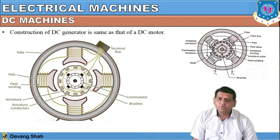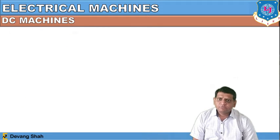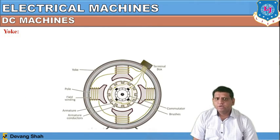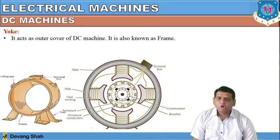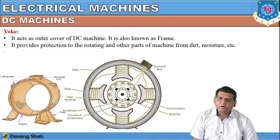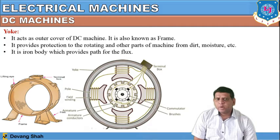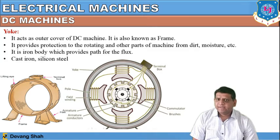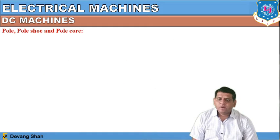Now we will discuss the individual parts of this construction. The first part is the yoke — the outer body of the DC machine. It acts as an outer cover, also known as a frame. It provides protection to the rotating and other parts of the machine from dirt, humidity, and other environmental factors. It is an iron body which provides a path for the flux, and it is made up of cast iron and silicon steel.